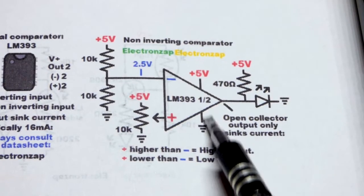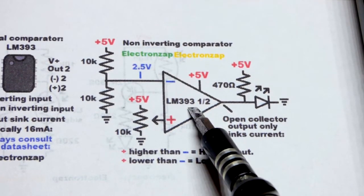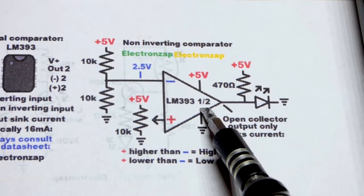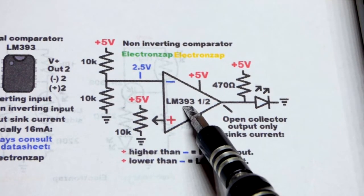So now in this video we're going to look at the LM393. It is a comparator circuit. There's two of them within the integrated circuit right there.